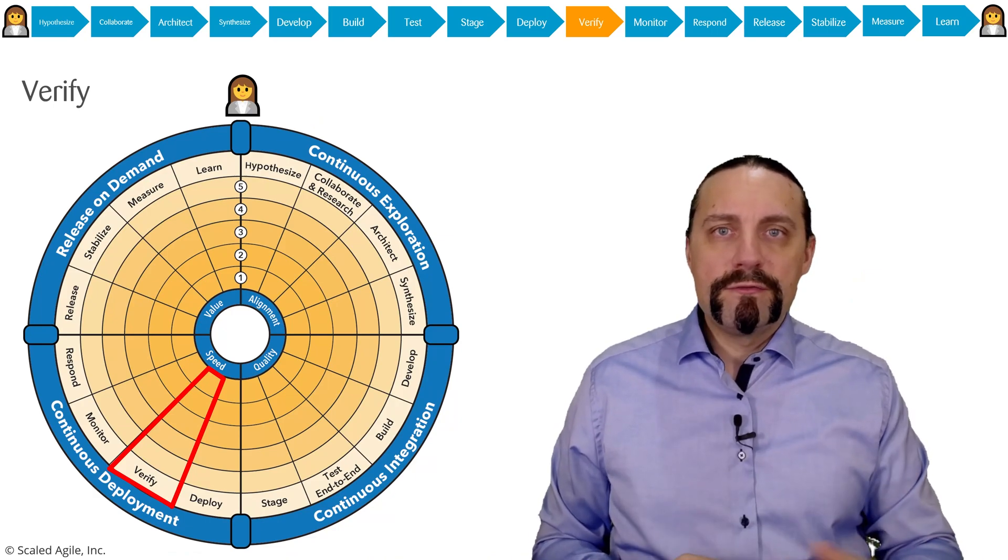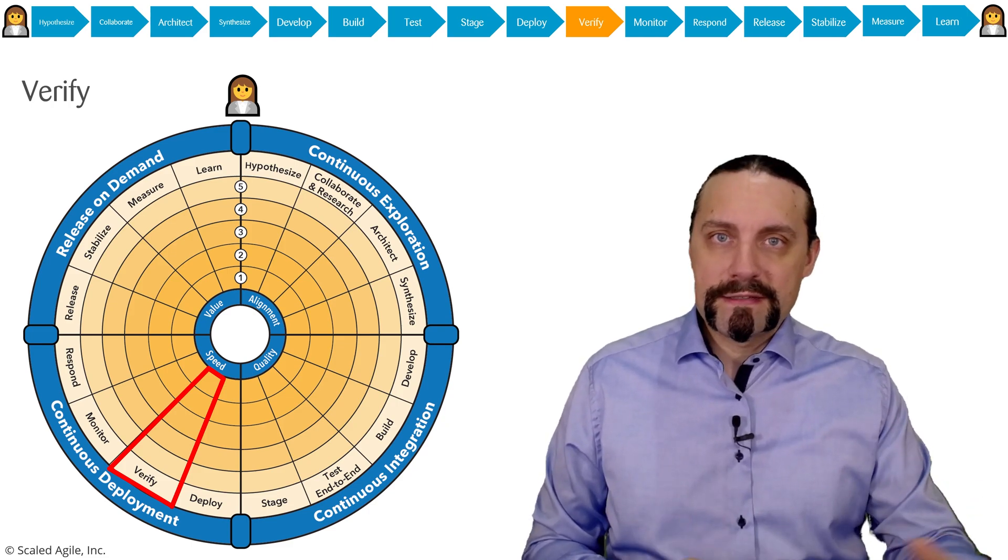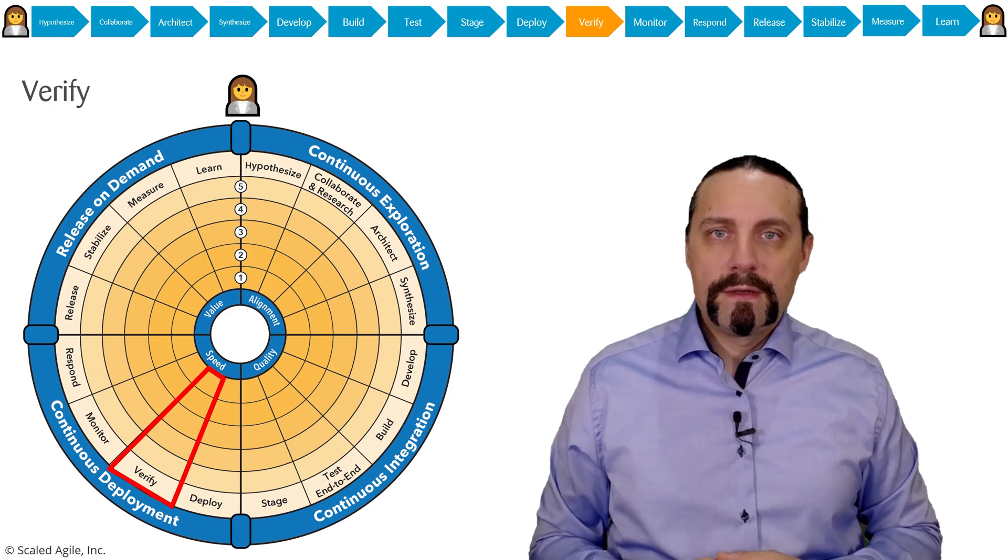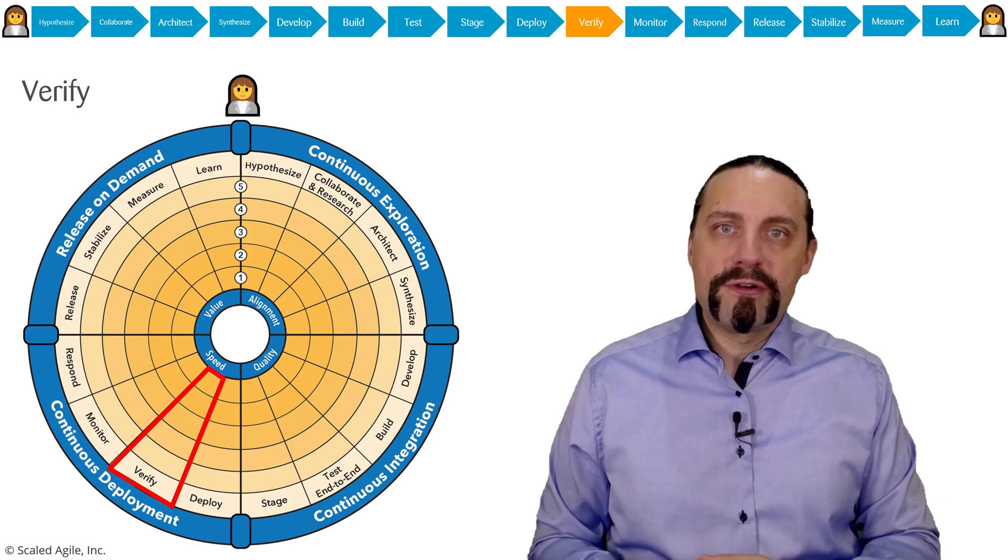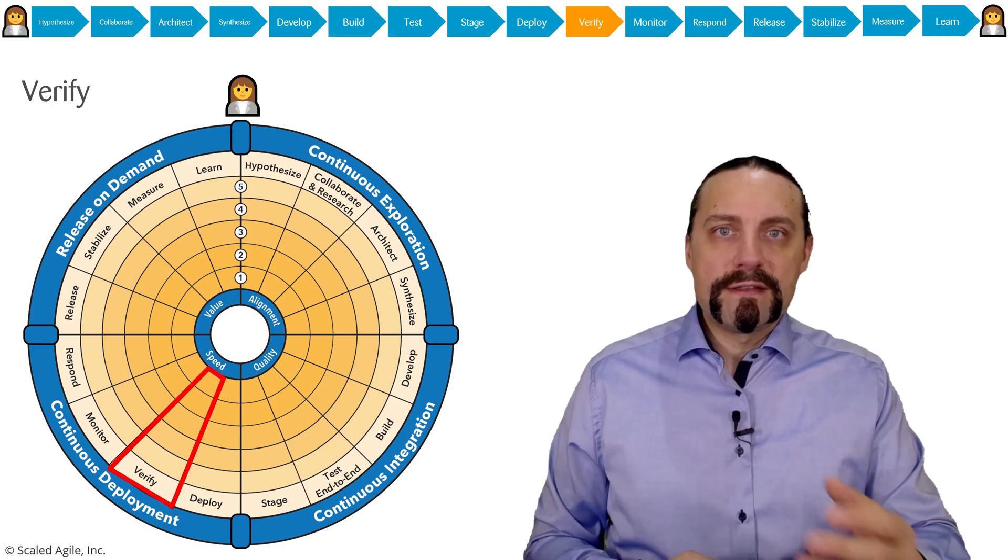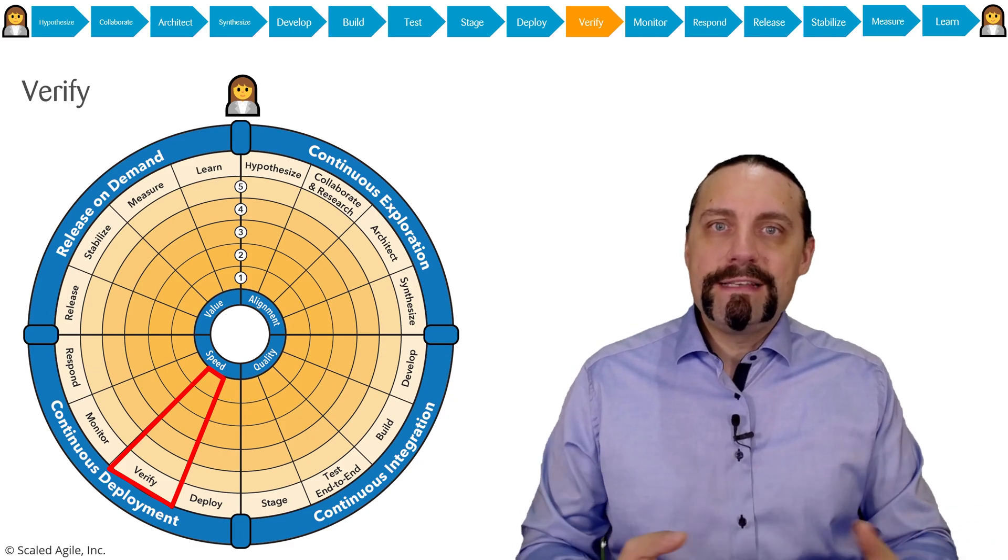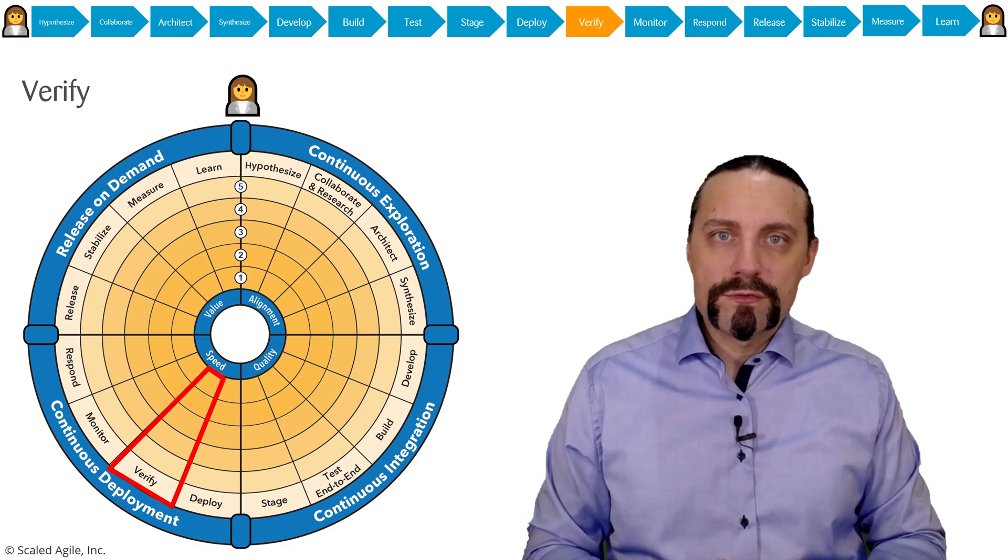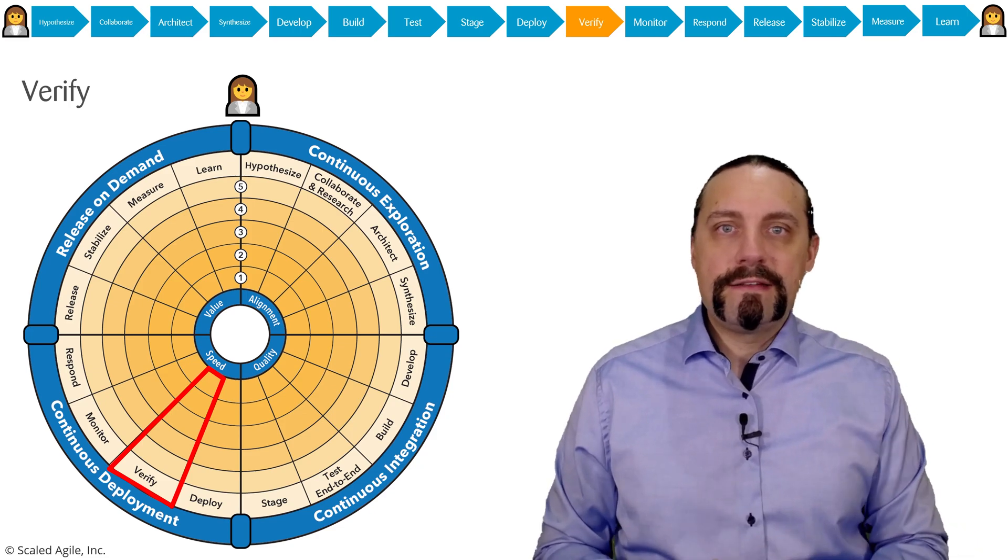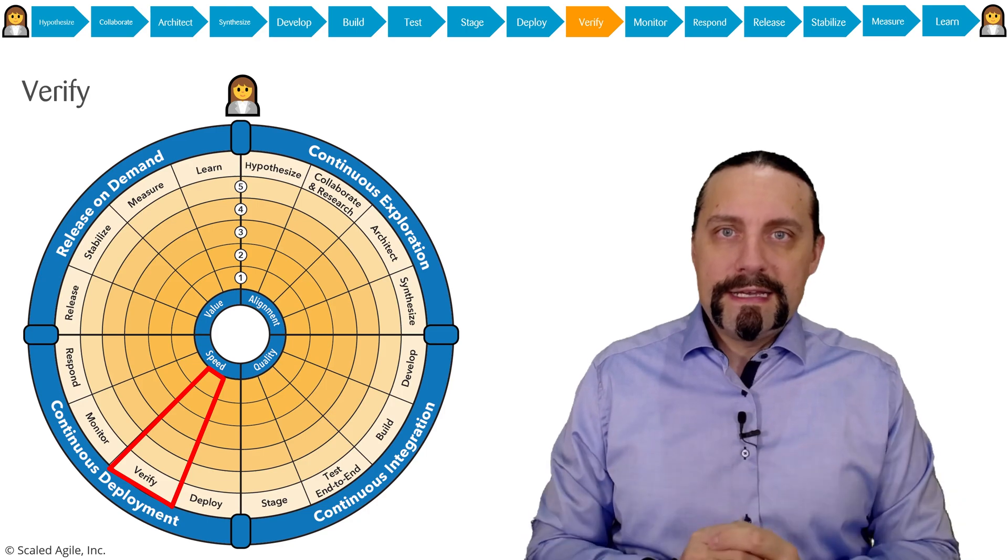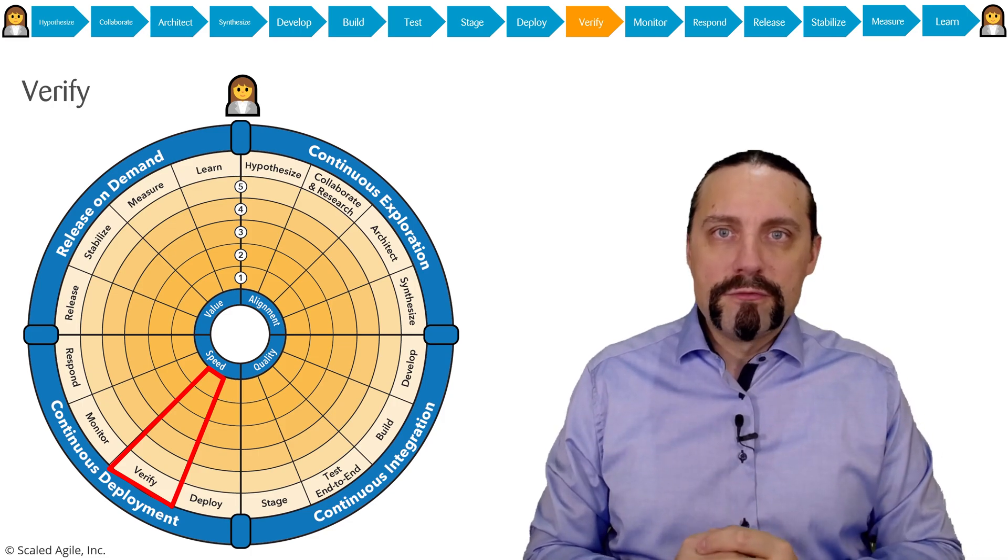When we are introducing new functionality into the production system, we need to verify this new functionality but also the existing functionality in production. We do this by distinguishing between deployment and release. Deployment is the act of bringing the compiled source code with the feature toggle off in production. Releasing is switching the feature toggle on and releasing the functionality to the users. By doing this, we of course need to verify the new functionality and the existing functionality in production. This enables us to bring new functionality very fast into production with a low risk.